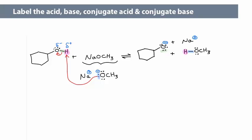In the products, the conjugate base is the species that would act as a base going in the opposite direction. The conjugate acid would act as an acid going in the opposite direction. Label the acid, base, conjugate acid, and conjugate base.